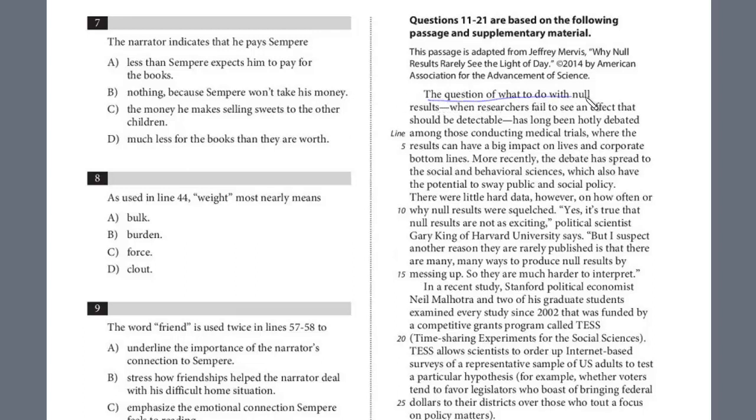I assume you've read this. Right away, in the beginning, it describes the question of what to do with null results. Then we have the definition in this non-essential clause: when researchers fail to see an effect that should be detectable, has long been hotly debated among those conducting medical trials, where the results have a big impact on lives and corporate bottom lines. This passage is explaining what to do with these null results, saying that the standard practice when scientists have these null results is they just toss it out.